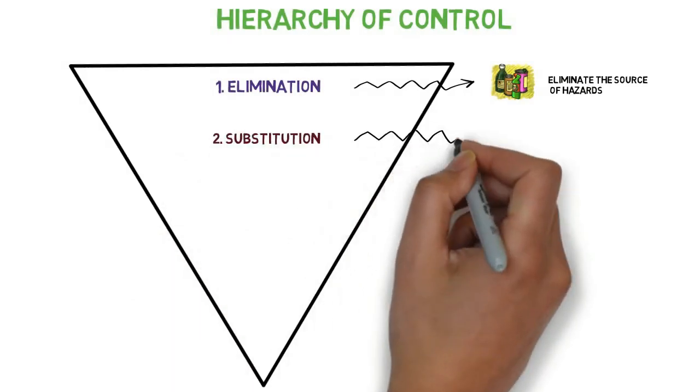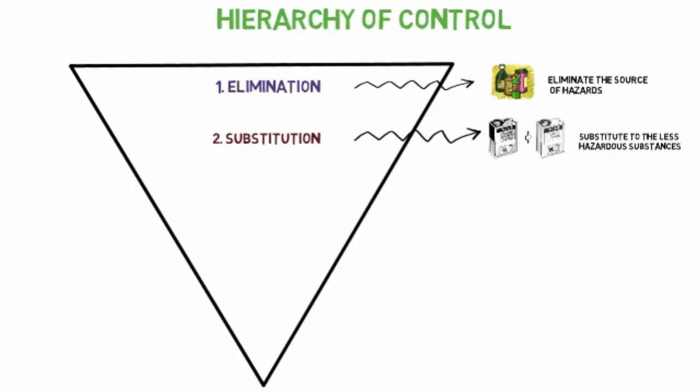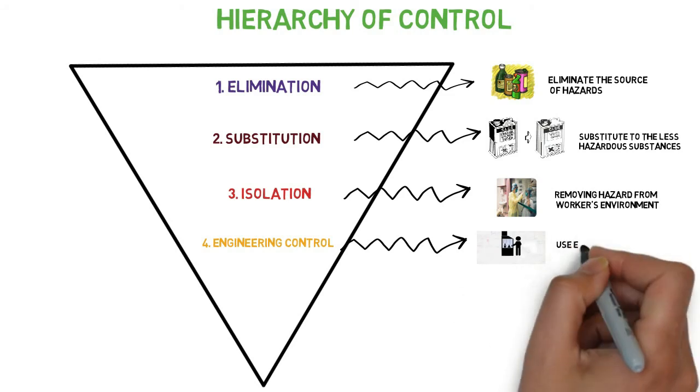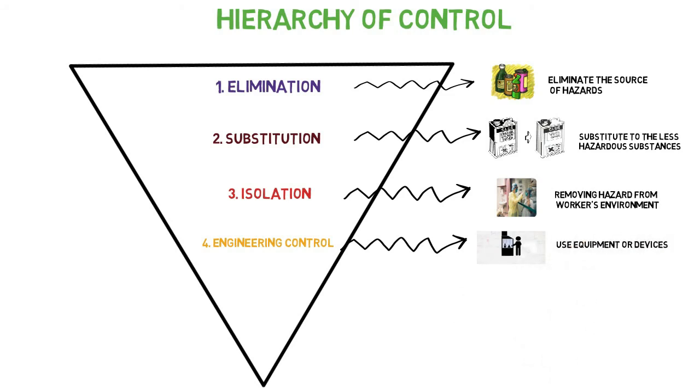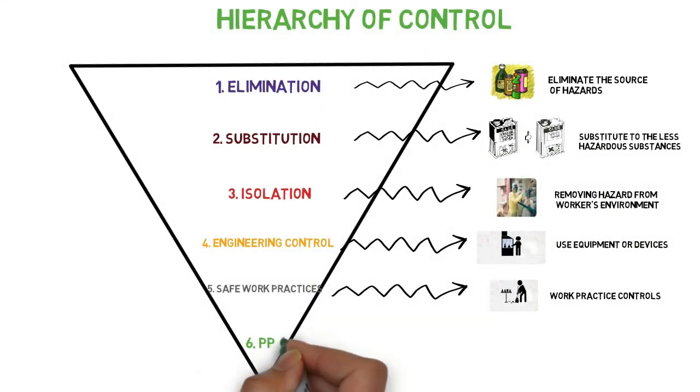Second, substitution - why use hazardous substances if you can find less hazardous ones? Third, isolation - sometimes safe isolation is important. Fourth, engineering control - some equipment or devices can protect you. Five, safe work practices - why ignore safety practices that may save you? And lastly, PPE - don't be lazy, PPE is actually a last resort.